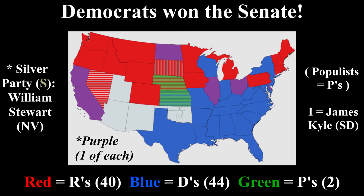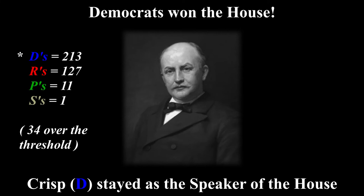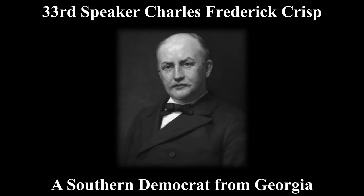In the Senate, the Democrats won, winning 44 out of 88 seats, one below the threshold. For the House, the Democrats won big, winning 213 seats, 34 over the threshold. Charles Crisp, a Southern Democrat from Georgia, stayed as the 33rd Speaker of the House.